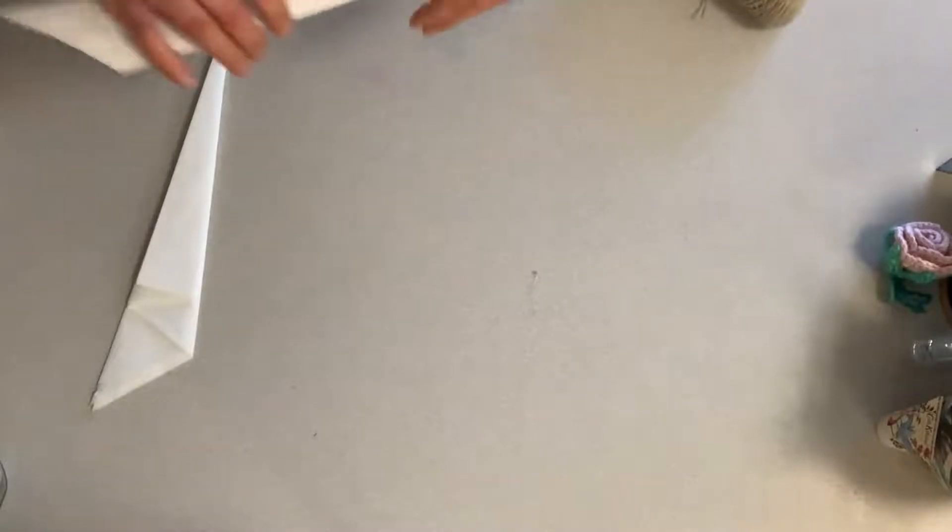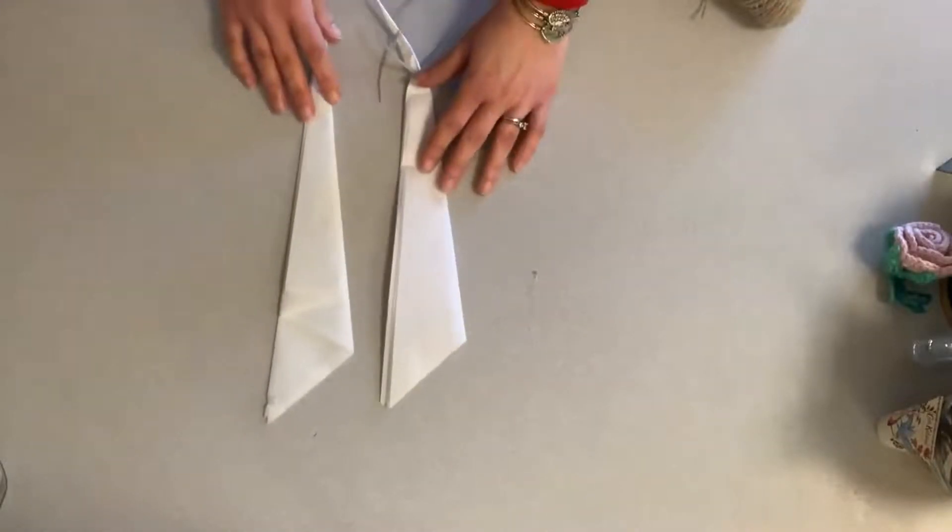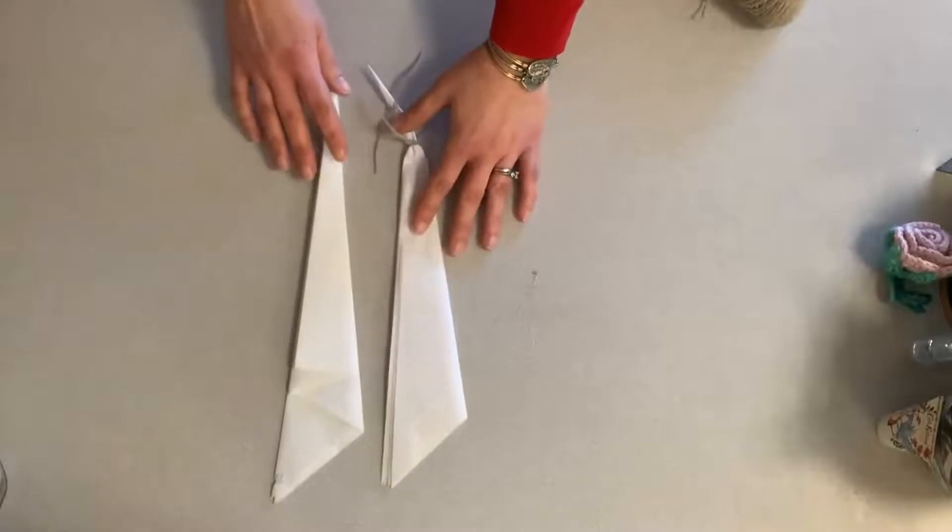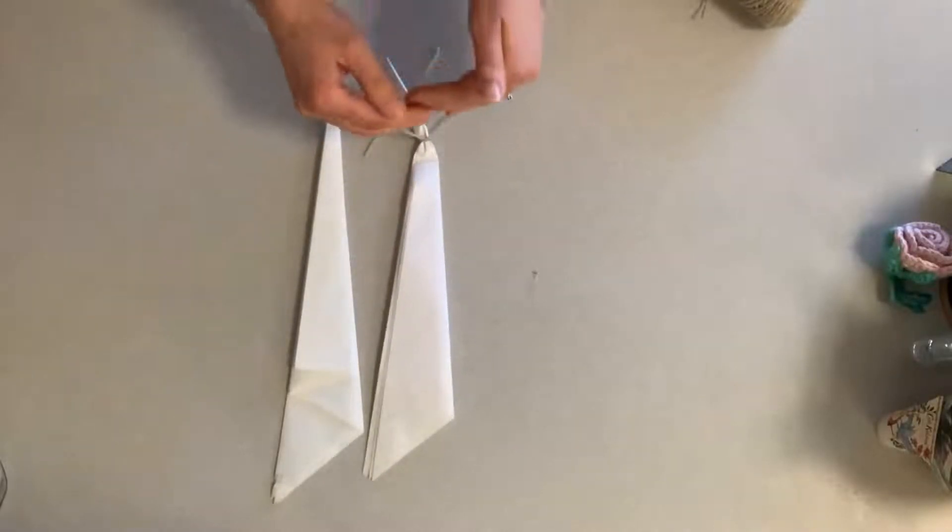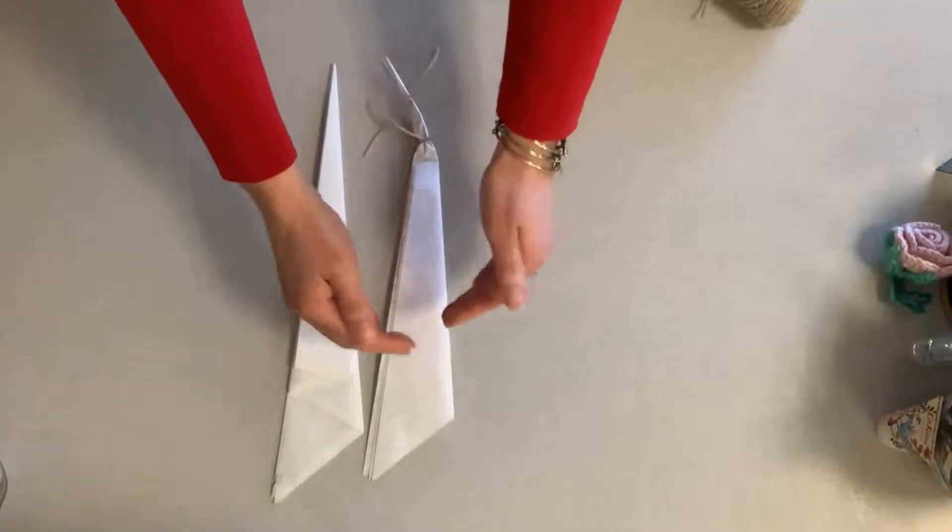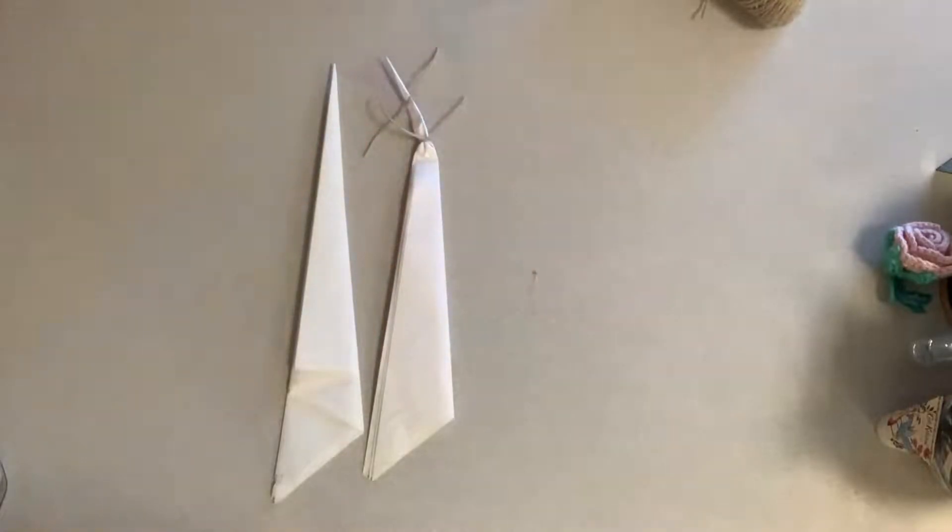So once you have your materials ready, what you're going to do is take the starburst that you folded and simply begin to tie knots throughout the tissue paper. You can space them as closely or as far apart as you want.